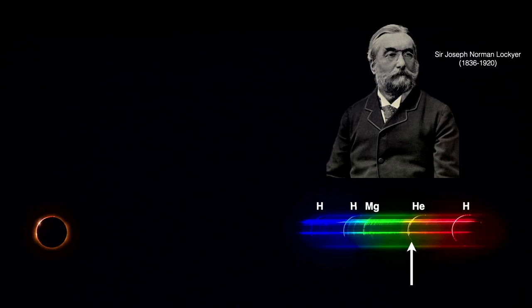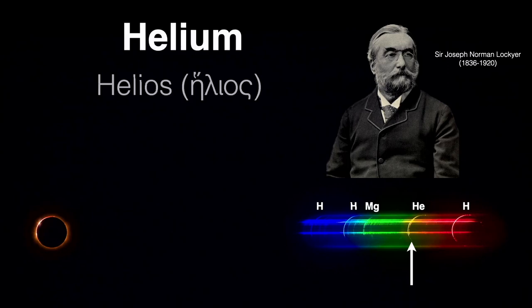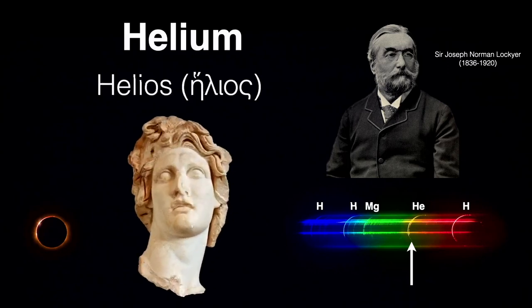By this spectroscopic method, helium was discovered on the sun before it was discovered on the earth. Lockyer named the element helium after the sun god Helios, the god and personification of the sun.